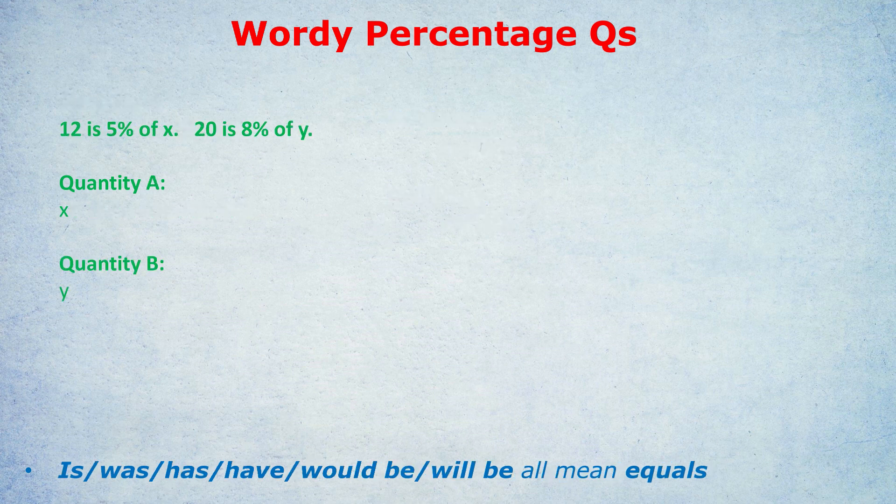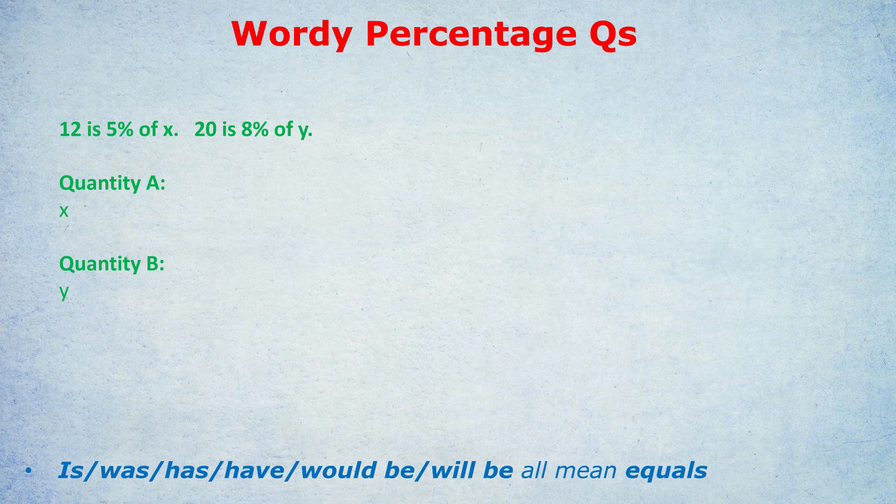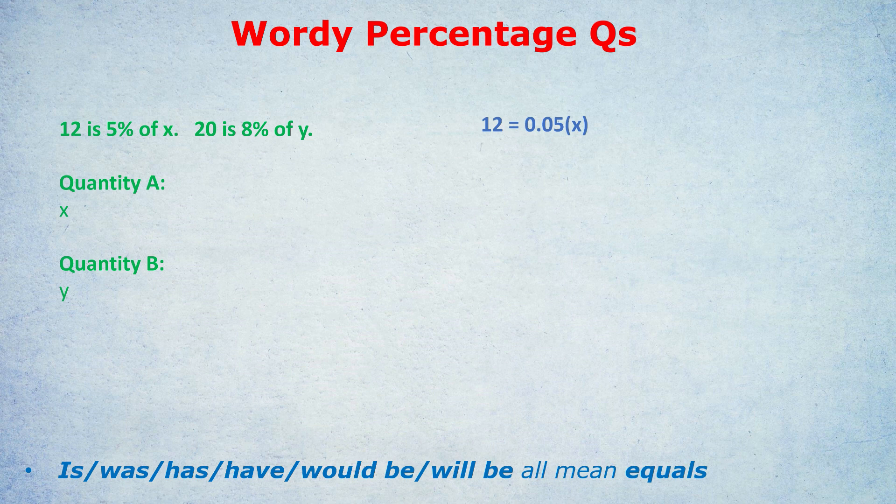Moving on. Now, it's a similar seeming question, but it's putting some of those skills we learned earlier to good use. Can you write the equation for this one? 12 is 5% of X. 20 is 8% of Y. What's bigger, X or Y? As I've reminded you down below, is, was, has, have, would be, will be, all mean equals. Okay, first equation. 12 is, that's 12 equals 5% of, as you can see, that's 0.05 times X.